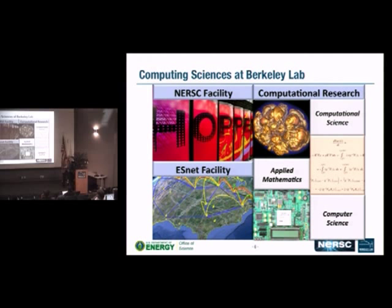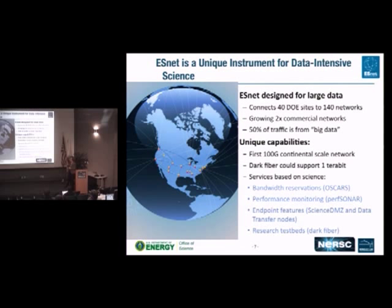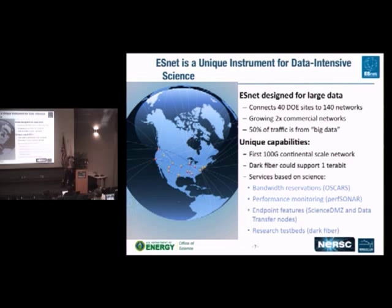For those at remote institutions or involved in science projects at other institutions, it's important to understand that the network is also an instrument you can use in science. ESnet has just recently gone through an upgrade — ESnet 5 is in production, which is the first 100 gigabit per second transcontinental-scale network. It connects all the labs to the rest of the internet through peering partners that connect ESnet to all other networks in the world.